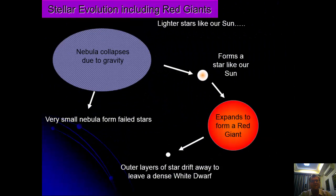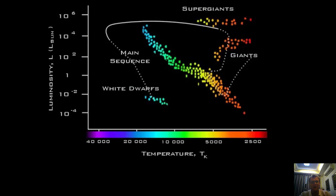If we think of this in a diagram, we have a nebula, a cloud of some sort, and that collapses due to gravity. If there's enough mass there, if it's too small, we have failed stars. It will form a star like our sun. This will expand to form a red giant. And the outer layers will drift away to leave a dense white dwarf. That's the story of stars like our sun.